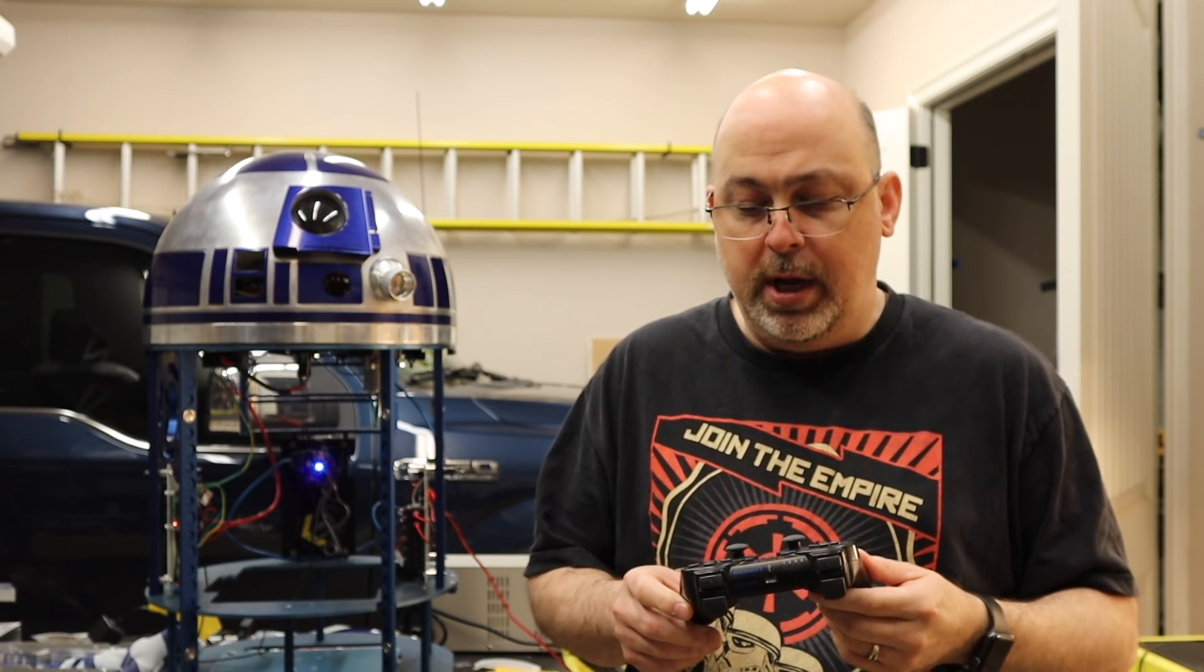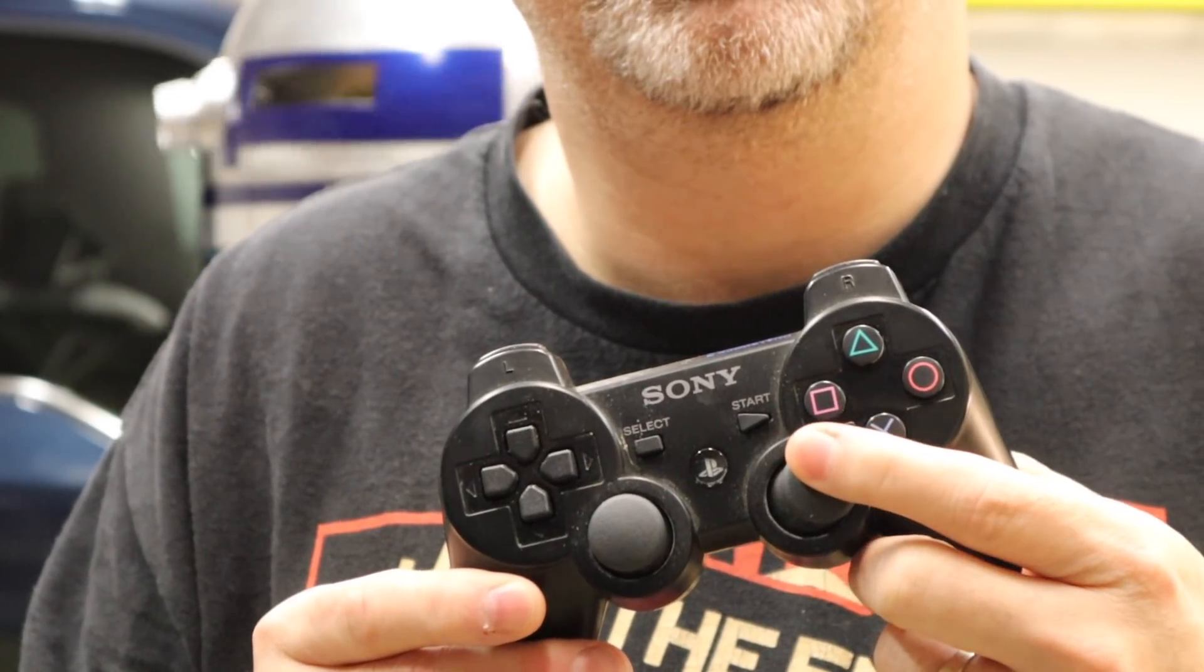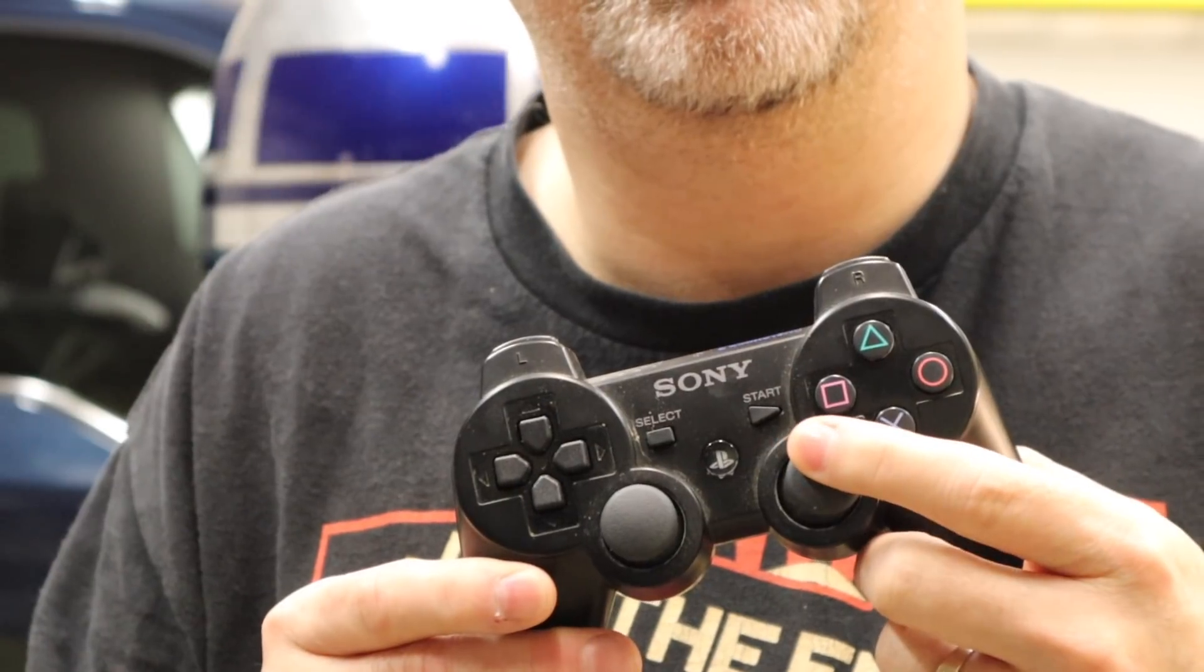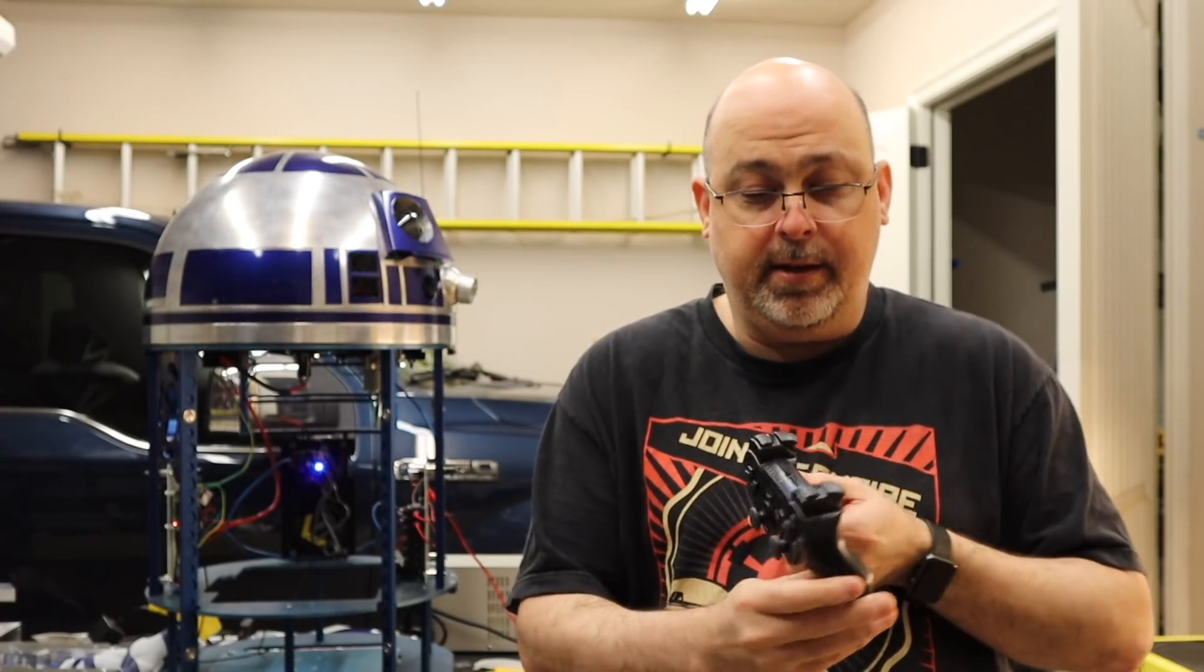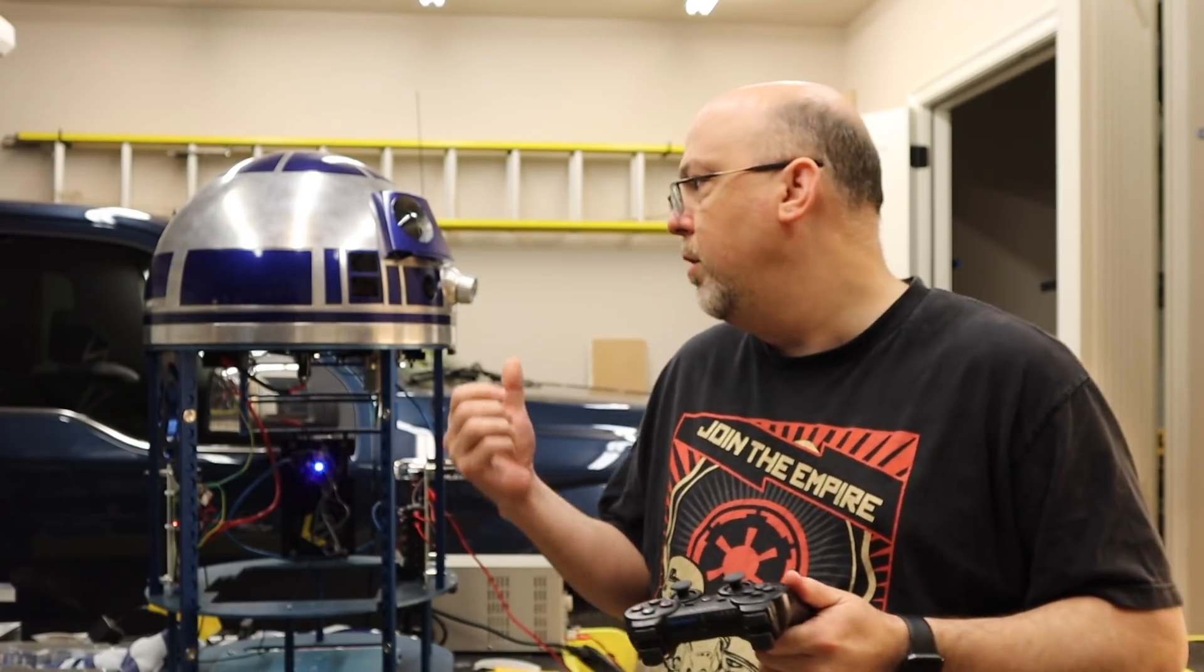So all of those commands live in what's called a mapping file within the astromech core. And they're all assigned to individual things like buttons, for example. And this one's assigned to a joystick, which turns the astromech head. And eventually, like I said, when I have an API, anything, literally anything will be able to send those commands to R2D2. Of course, they'll require authentication.